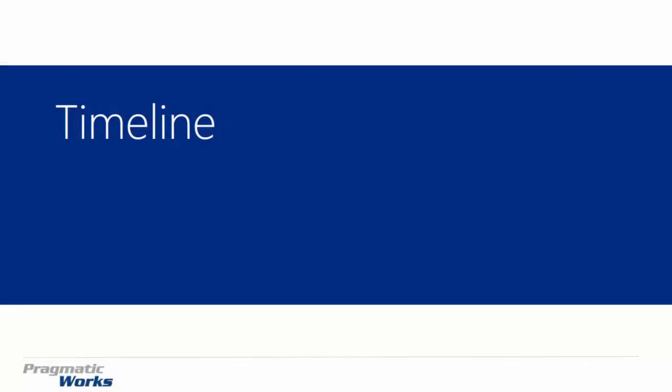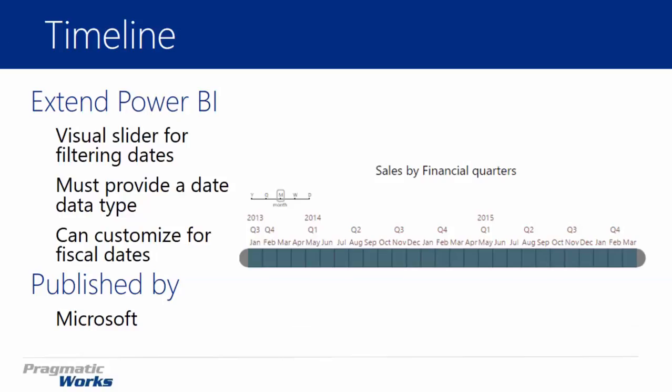Hi and welcome back to the Power BI Custom Visuals course. In this module we're going to be looking at the Timeline Visual. The Timeline Visual is a filter — a type of filter very similar to a slicer inside of Power BI, but this one is solely focused around filtering down dates. It gives you a slider, as you can see on the screen on the right hand side, and that slider allows you to easily select or multi-select dates, months, quarters, years — all around a time.